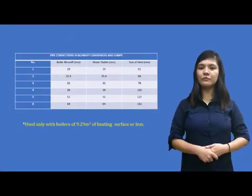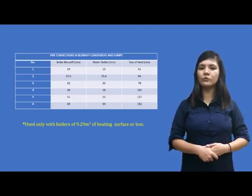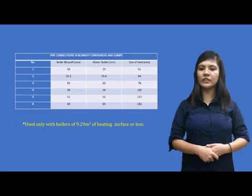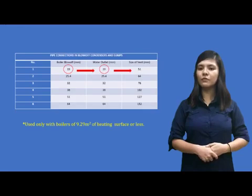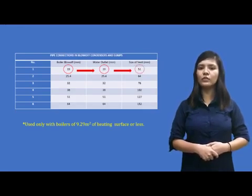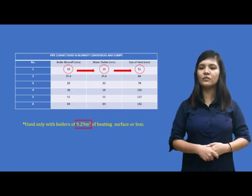Here's a table for reference showing the sizes of boiler blow-off, water outlet, and vent, which vary accordingly. For example, number 1: blow-off has a measure of 19 mm, which will also need 19 mm of water outlet and 51 mm of vent. Remember to use it only with a boiler of 9.29 m² of heating surface.